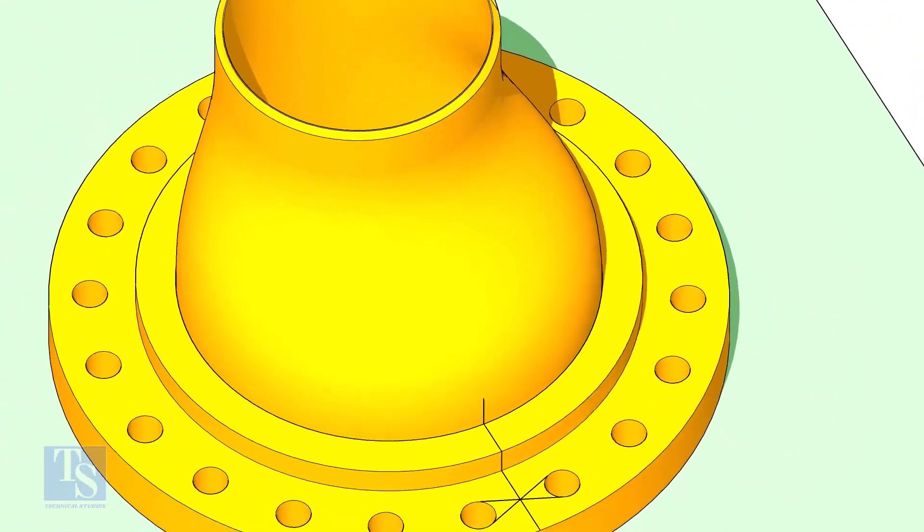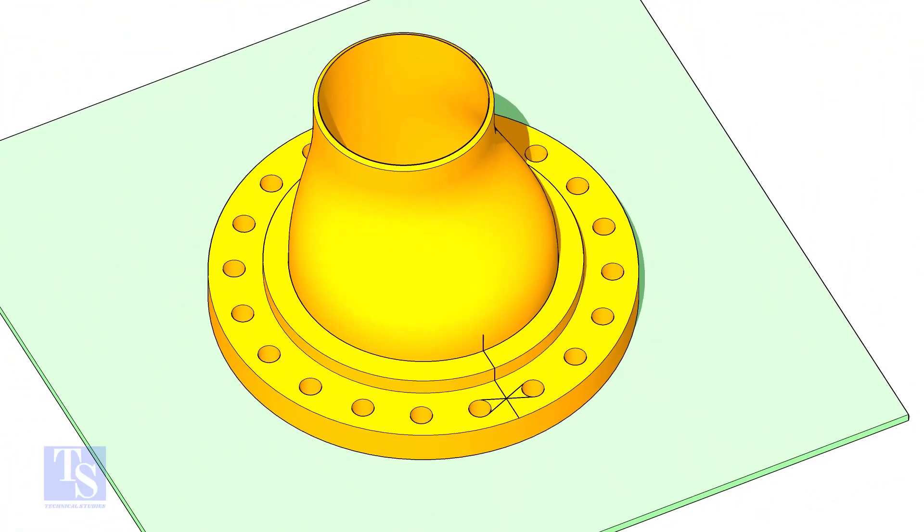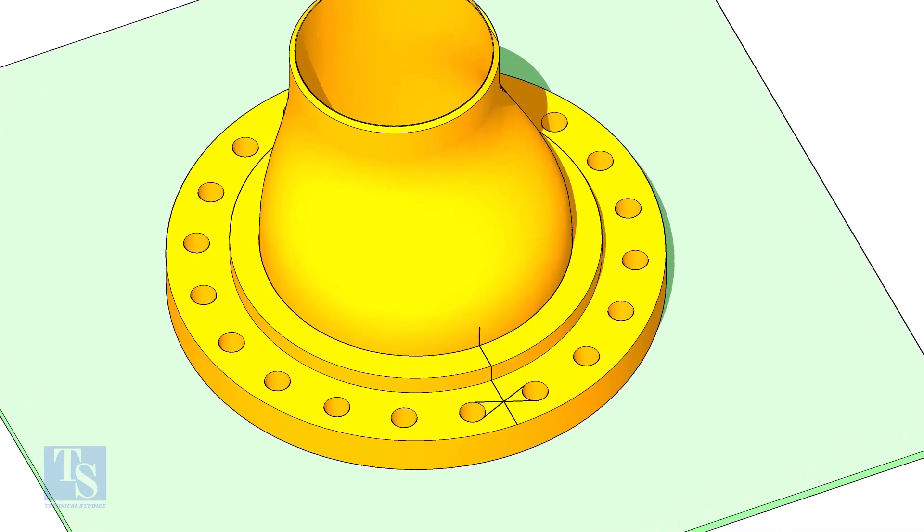Now, put the reducer on the nuts in the flange. Match the center lines of the flange and the reducer.